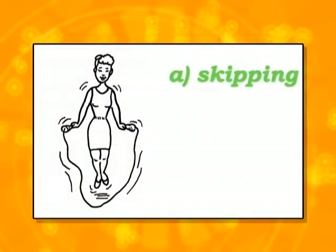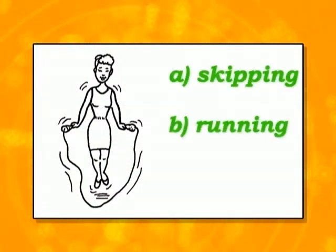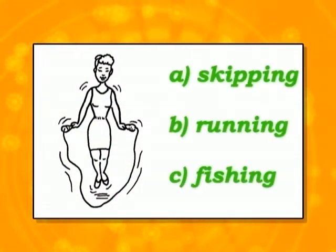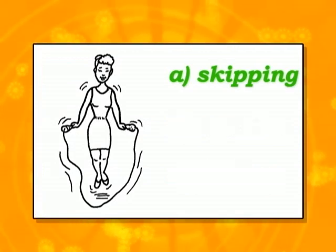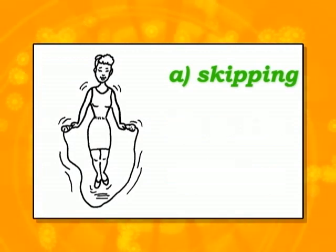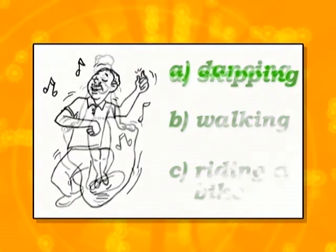Now let's look at the pictures. You tell me whether the correct answer is A, B, or C. A, B, C. A — Skipping. Choose the correct one.